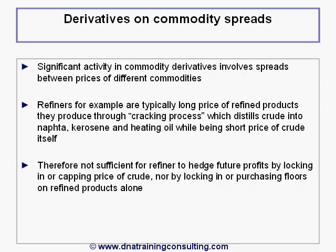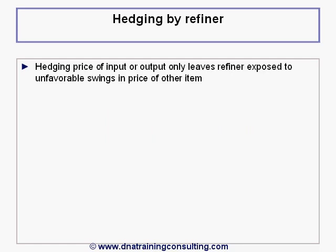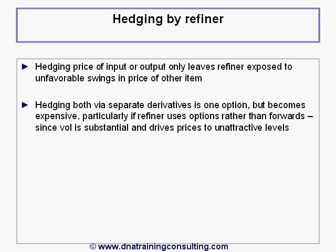It is therefore not sufficient for the refiner to hedge future profits by locking in or capping the price of crude, nor by locking in or purchasing floors on the refined products alone. Hedging only the price of the input or output leaves the refiner exposed to unfavorable swings in the price of the other item. Hedging both via separate derivatives is one option, but this becomes very expensive, particularly if the refiner uses options rather than forwards, since volatility is substantial and drives option prices often to unattractive levels.